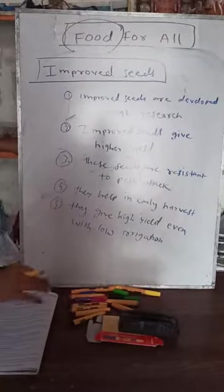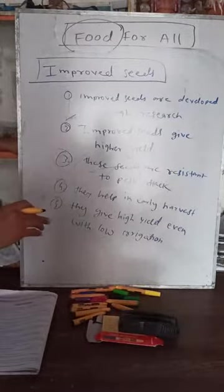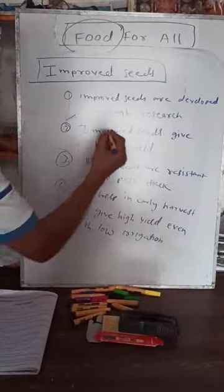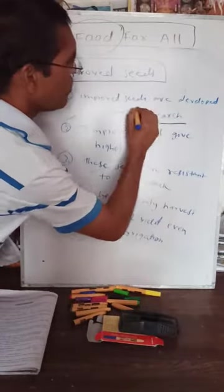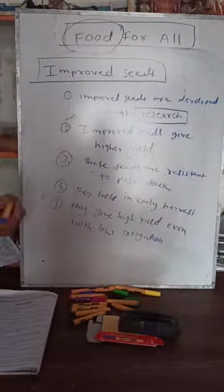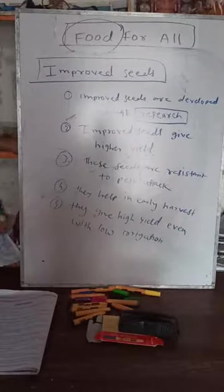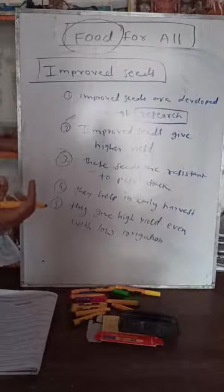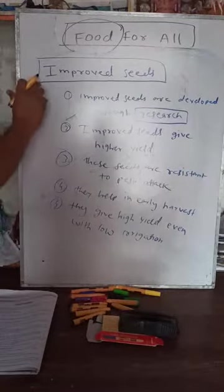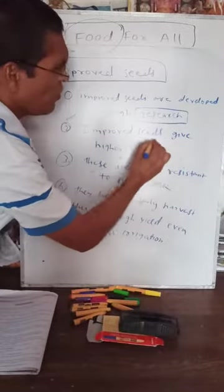Today farmers are not keeping seeds from this year's harvest — they sell everything and purchase improved seeds from the market when the Rabi or Kharif season comes. We now have many research laboratories, and improved seeds are developed through research at agricultural universities like Parbhani Agriculture University.